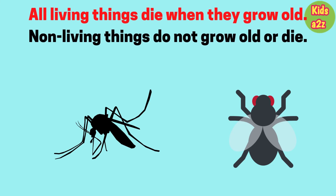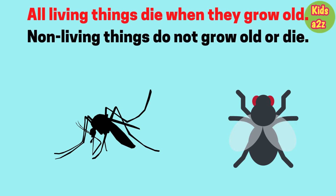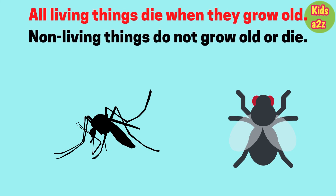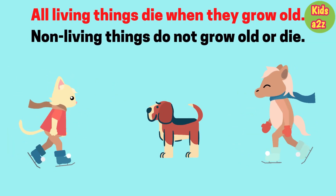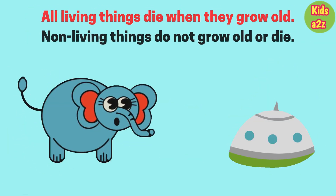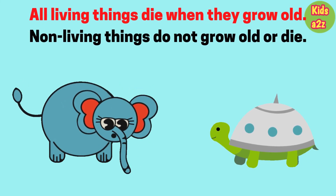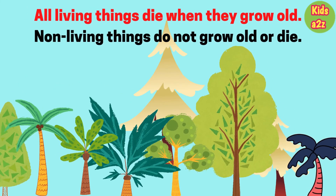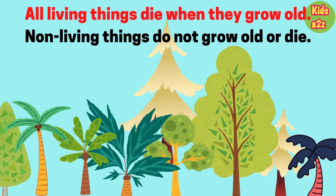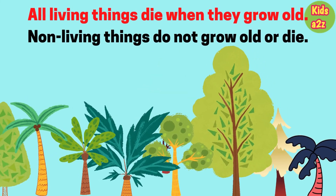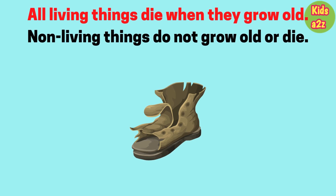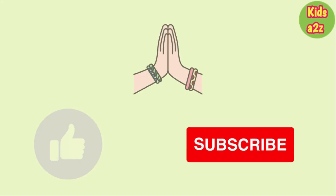All living things die when they grow old. Non-living things do not grow old or die. Some creatures like mosquitoes and flies live for only a few days. Some like dogs, cats and horses live for a few years. Other animals like elephants and tortoises live for 60 to 100 years or more. Trees also live for many years — some redwood trees in California are 600 years old. Non-living things simply wear away with use and time.